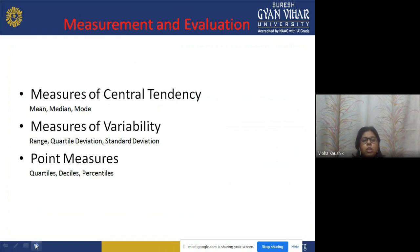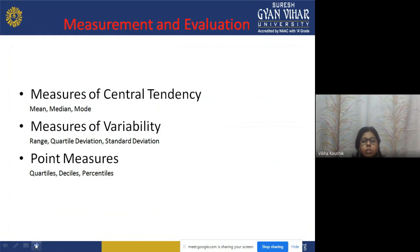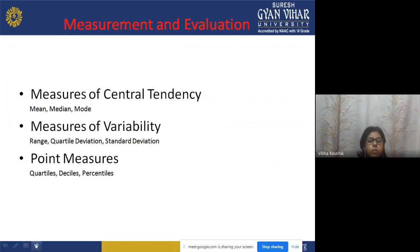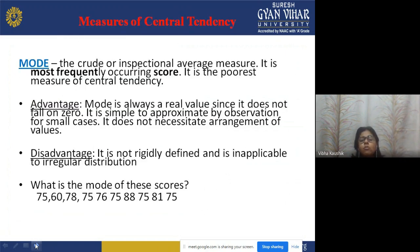In measurement and evaluation, measures of central tendency include mean, median, and mode. Measures of variability include range, quartile deviation, and standard deviation. Point measures are related to quartile, decile, and percentile. We will now discuss measures of central tendency, which includes mean, mode, and median.